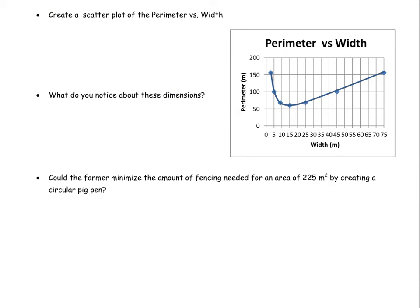So let's go ahead and see what the scatter plot looks like here. Here's our scatter plot of perimeter versus width. And you'll notice again a curve of best fit makes sense. Kind of looks like a little Nike symbol there. But again we're looking for what are the dimensions of the shape that uses the least amount of fencing, so the lowest perimeter. And notice that one's down here.